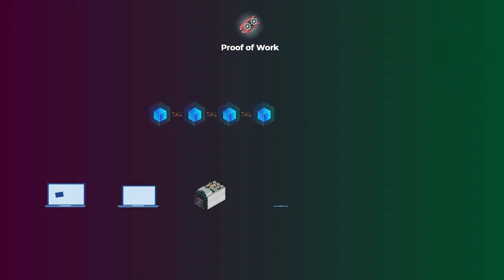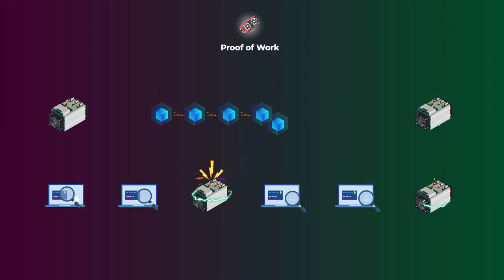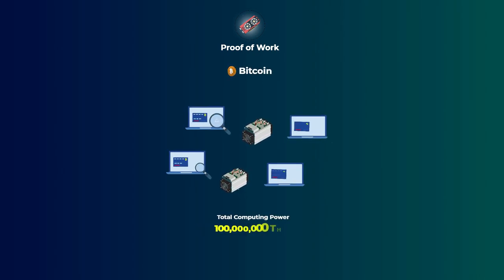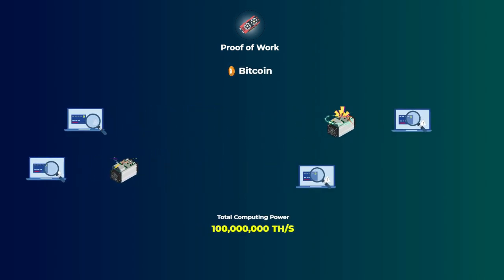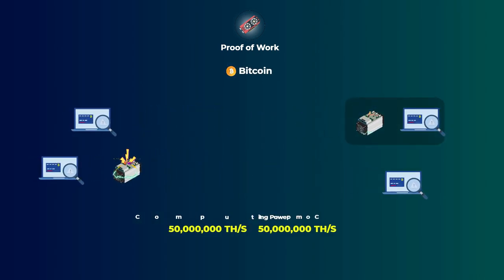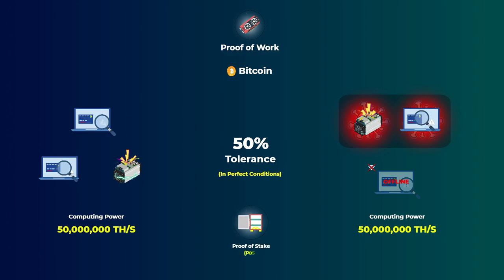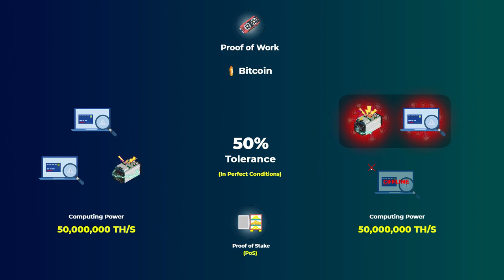For example, in Proof of Work, there are a lot of powerful computers and hardware devices connected to the network to process transactions. In Bitcoin, the network can actually tolerate up to 50% of the computing power of all computers being malicious or offline and still continue working correctly. Proof of Stake blockchains also have Byzantine fault tolerance to varying degrees; it all depends on how the network is designed.